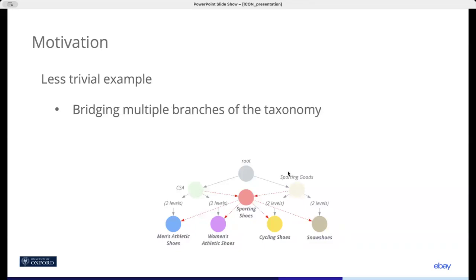Here, we have an inferred concept, sporting shoes, that connects two very different and faraway branches in the taxonomy, namely CSA and sporting goods. These missing concepts give new insights in the taxonomy and make the quintessential motivation for our work.